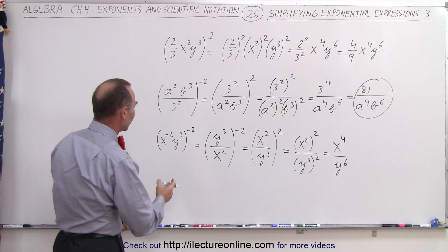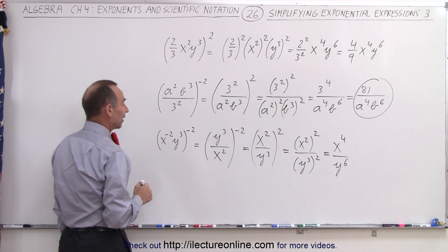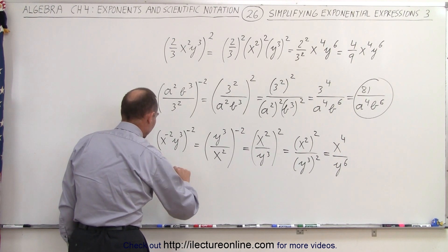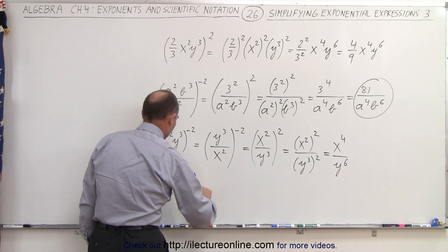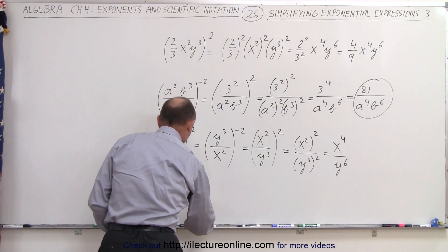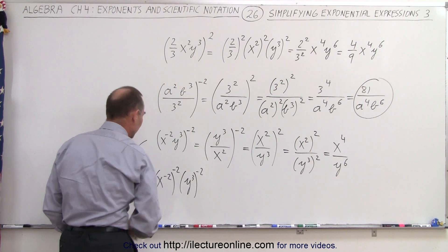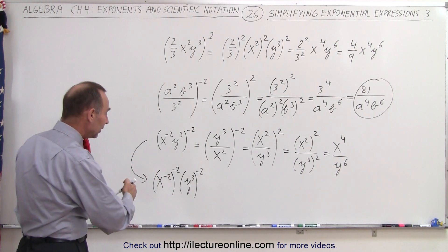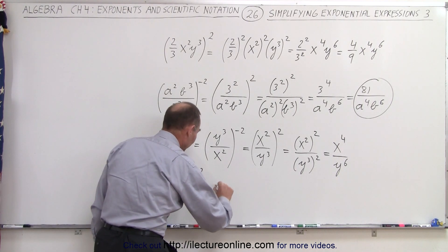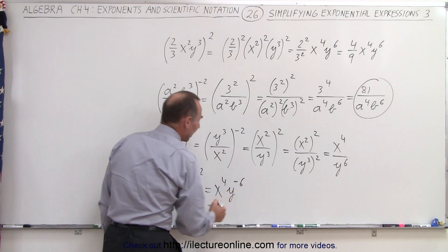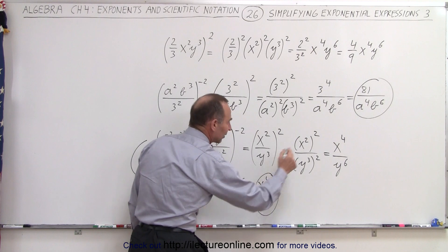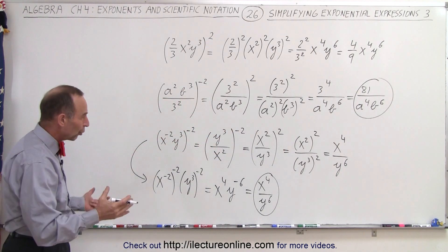Could you have done this differently? Certainly. We could have immediately applied the negative exponent to what we have inside the parentheses without converting to a positive exponent first. That means writing x to the minus 2 raised to the minus 2 power, and y to the third raised to the minus 2 power. Now applying the multiply-exponents rule: negative 2 times negative 2 gives positive 4, so we get x to the fourth times y to the negative 6. Moving y to the negative 6 to the denominator gives x to the fourth divided by y to the sixth — the exact same answer.